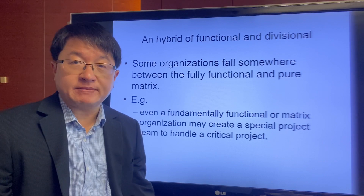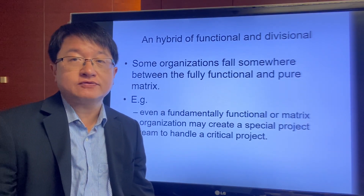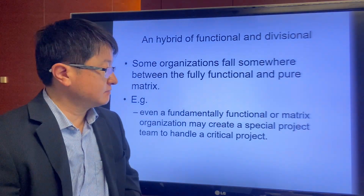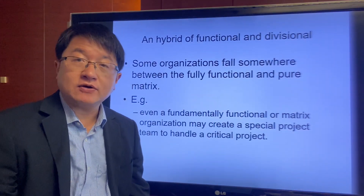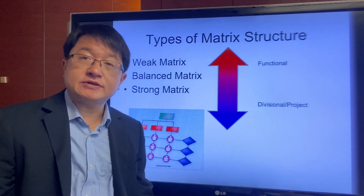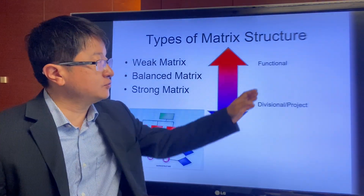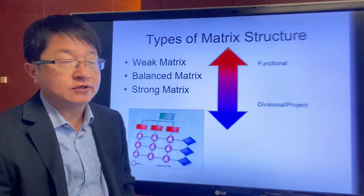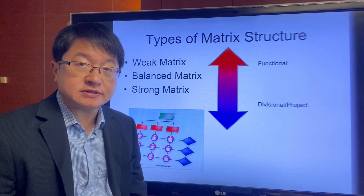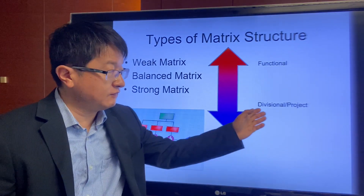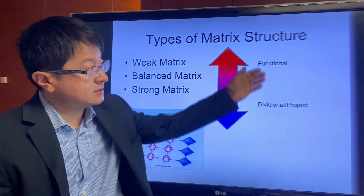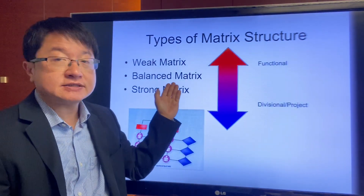Some companies that are fundamentally functional structures may sometimes form special projects — these are considered a type of weak matrix. If the structure is more biased toward functional structures, it is called a weak matrix. When it looks more like a divisional or project structure, it is called a strong matrix. When it is somewhere in between, it is called a balanced matrix.